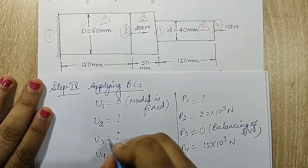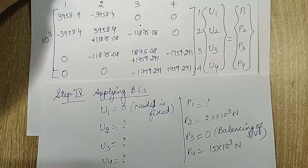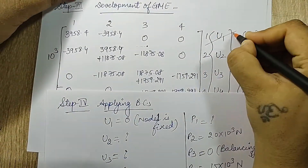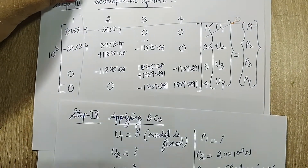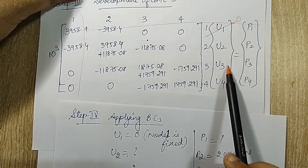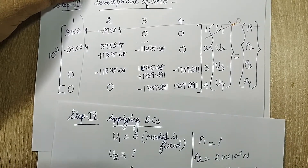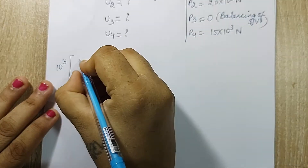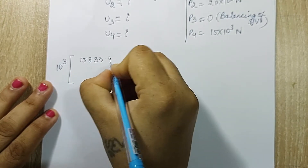I will now substitute these boundary conditions. Since u1 = 0, the first row and first column can be neglected for now. I will write all the remaining terms, calculate u2, u3, u4, and then revisit to find p1. Taking 10³ common, after addition I get 15833.48 in the [2,2] position.